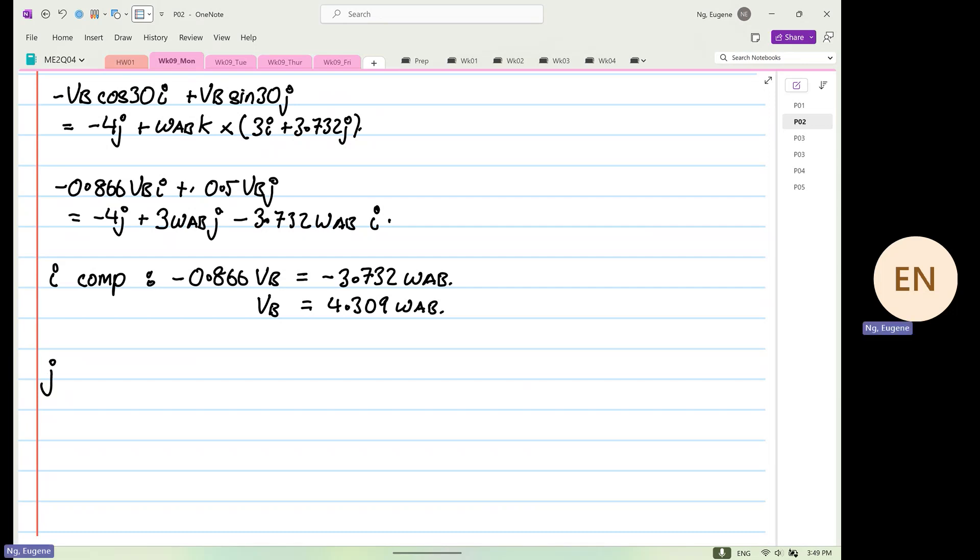Then we look into J component. So J component is 0.5 VB, and then you have minus 4 plus by 3 Omega AB. Do you guys spot anything? One mistake I made - you get a prime of B. So now we're going to substitute VB into our equation. So 0.5 times VB is equal to 4.309 Omega AB, equal to minus 4 plus by 3 Omega AB.